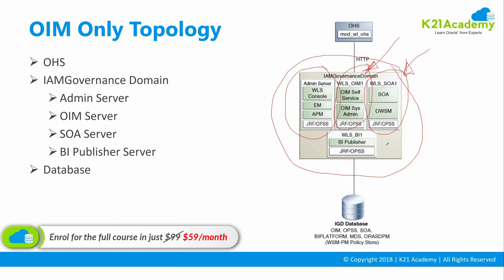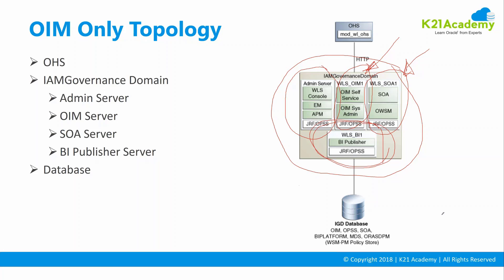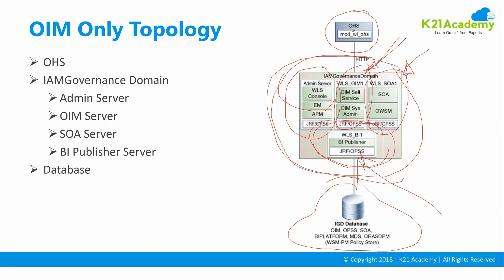You also have a BI Publisher managed server, which is a component of Oracle Business Intelligence Enterprise Edition. This BI Publisher managed server is used for compliance reporting for Oracle Identity Manager. So in the Oracle Identity Manager topology, you get one WebLogic domain with three managed servers and one admin server. You also need a database to store the data, so you have a database repository. On top, you have an Oracle HTTP server or web server, which is an optional component.